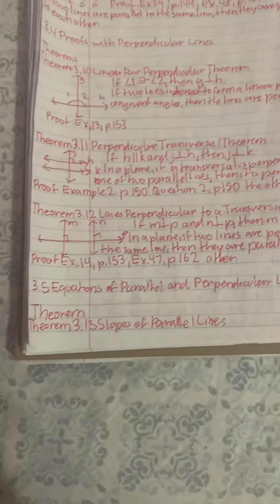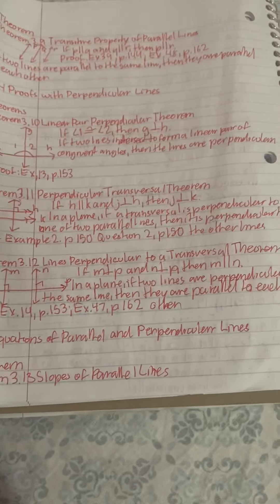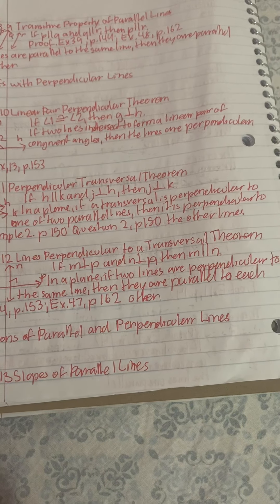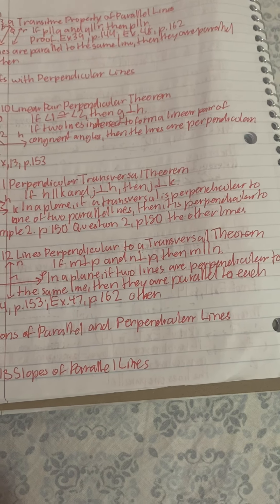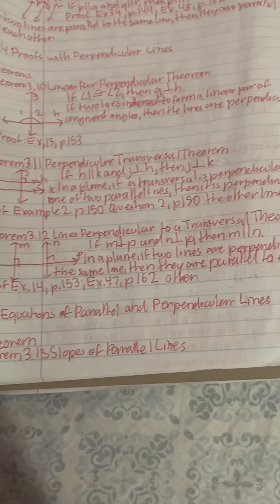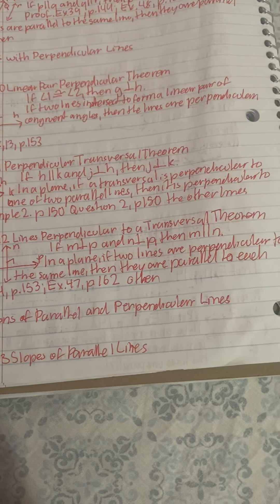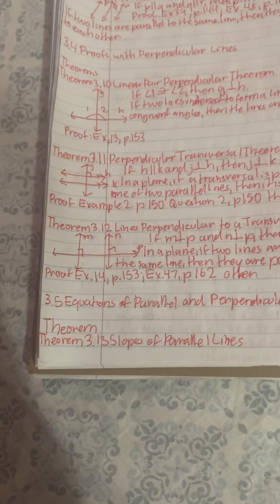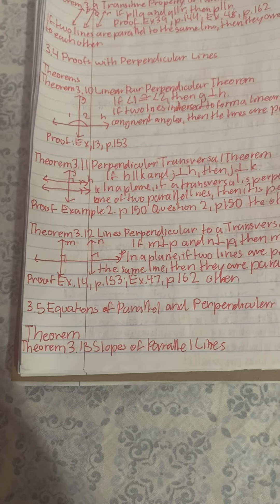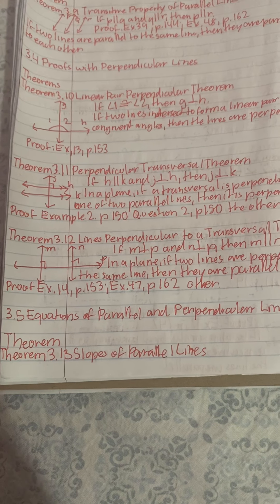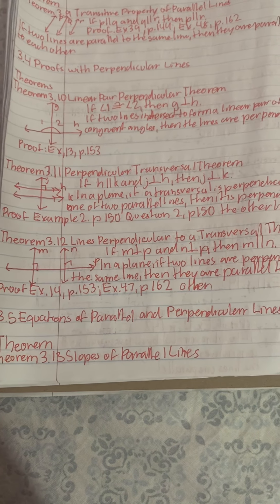Theorem 3.12, Lines Perpendicular to a Transversal Theorem: In a plane, if two lines are perpendicular to the same line, then they are parallel to each other. Proof. Example: 14P153. Example: 47P132.